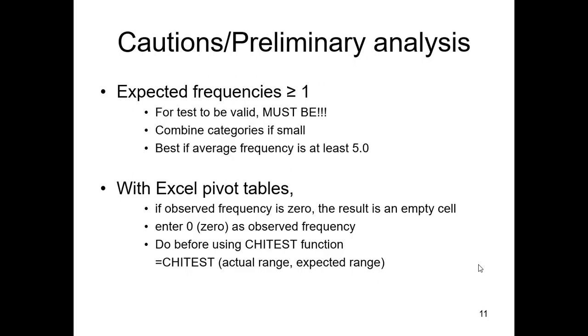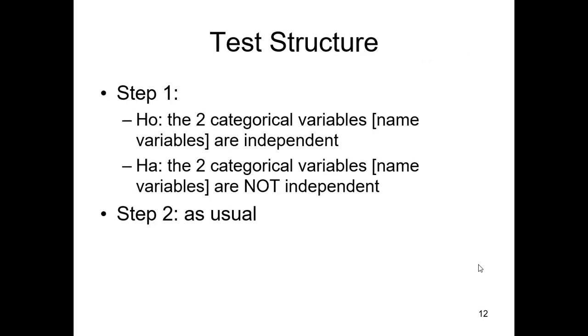With Excel pivot tables, if observed frequency is zero, this results in an empty cell. Enter zero as the observed frequency. Sometimes when you're using a chi-test function, things may go awry if there's not an actual value in there. So now the chi-test, test p-value, calculate very simple. We have one function, two arguments. We compare the actual range or the observed values and then our second argument is the expected range. And then that calculation for that chi-square test statistic, Excel does that for us and then uses that in order to find the p-value.